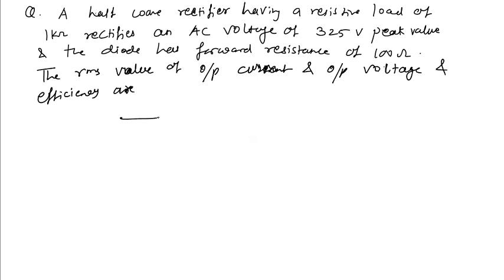Suppose this is a rectifier circuit. Load resistance is given, resistive load of 1 kilo ohm, diode has forward resistance of 100 ohms, RF equal to 100 ohms. And there is an input voltage which has 325 volt peak value. Means Vm equal to 325 volts.